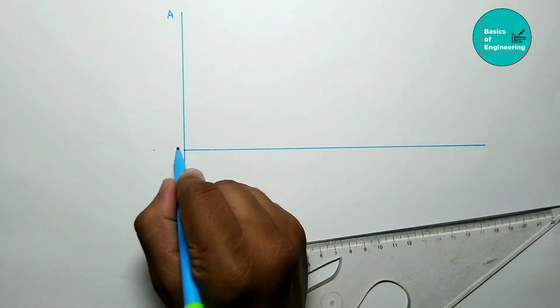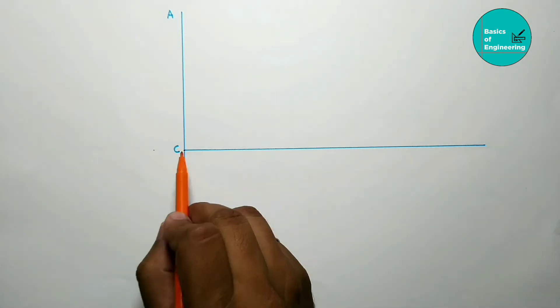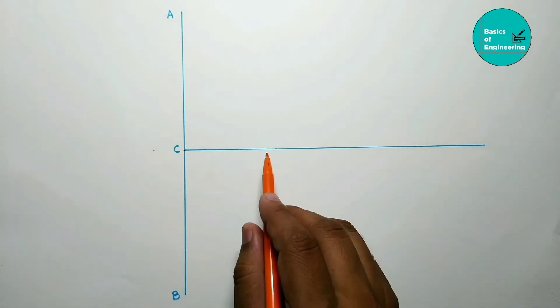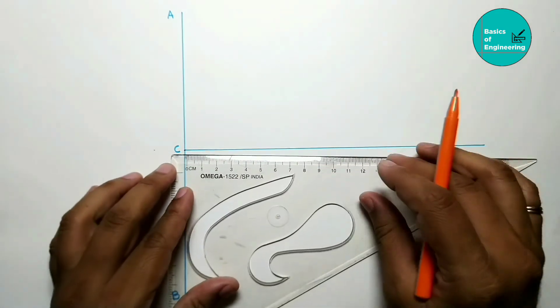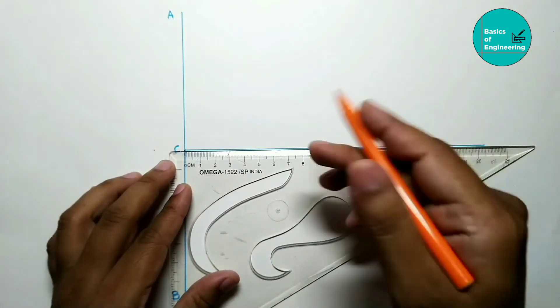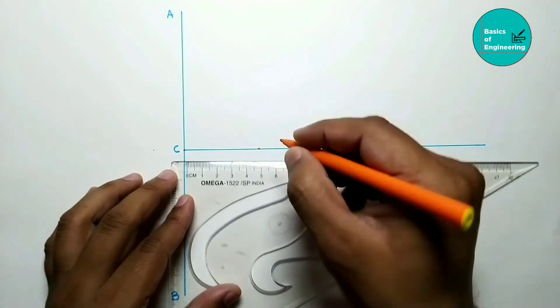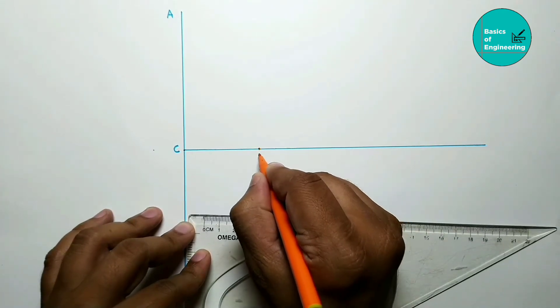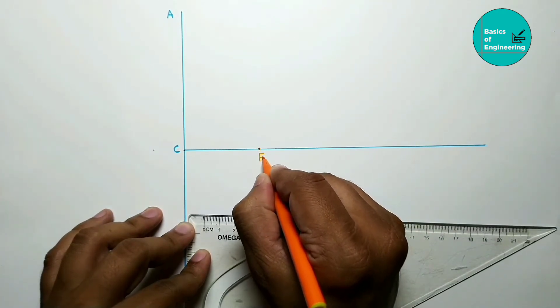Give this point name as C point. From directrix, the focus point is at distance 50 mm. So mark the focus point at 50 mm. This is focus point F.